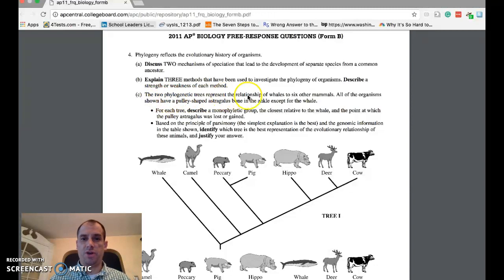The two phylogenetic trees represent the relationship of whales to six other mammals. All of the organisms shown have a pulley-shaped astragalus bone in the ankle except for the whale. For each tree, describe a monophyletic group or clade, the closest relative to the whale, and the point at which the pulley astragalus was lost or gained. Based on the principle of parsimony, the simplest explanation is the best. And the genomic information in the table below, identify which tree is the best representation of the evolutionary relationship of these animals. Justify your answer. We have a phylogenetic tree here. Whale starts on the left, cow on the right, hippo in the middle. We use what we call tree one. Today, what I'm going to show you is how to work on part C.